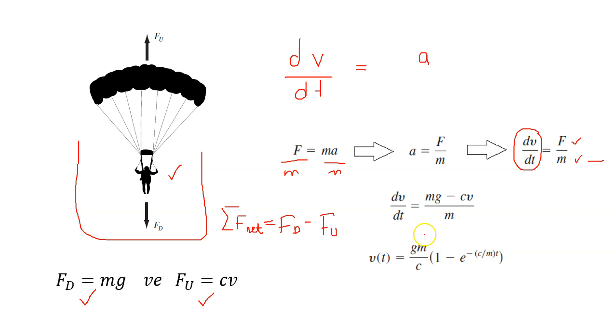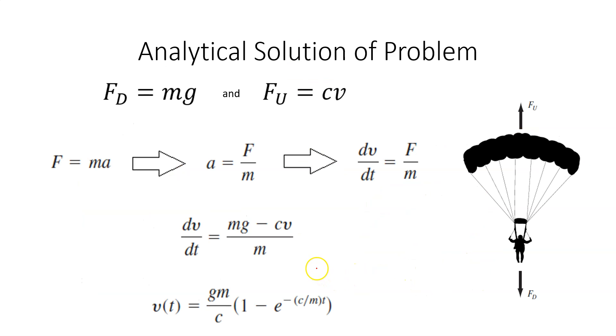If you look at our system, we have two forces as we've written at the previous page: mg and cv, and the total net force is F_D minus F_U. If we take the downward direction as positive, we can write mg minus cv instead of F. In numerical textbooks, you can find directly the solution of this equation.